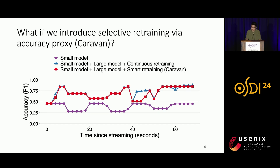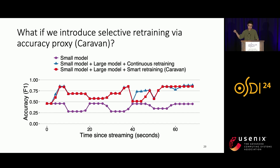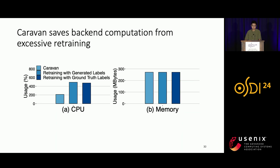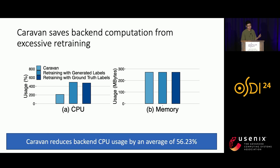On the previous slide we relied on continuous retraining, but is that always necessary? After introducing selective retraining via accuracy proxy — the full Caravan system — the red curve almost overlaps with the blue curve for most of the time, indicating you don't need to always retrain to keep up with changing traffic dynamics. Caravan keeps in-network ML models up to date while saving substantial back-end compute resources through selective retraining, reducing back-end CPU usage by an average of 56% with no extra memory overhead.